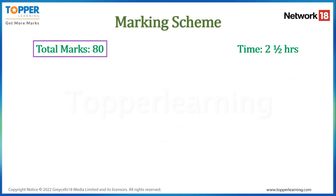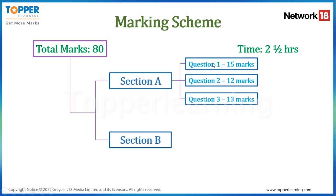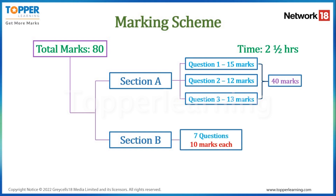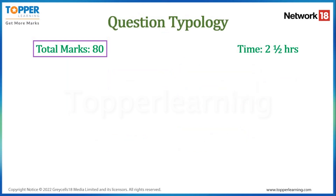Now let's talk about the marking scheme. Section A will have 3 questions: Question 1 is of 15 marks, Question 2 is of 12 marks, and Question 3 is of 13 marks — totaling 40 marks. Section B has 7 questions, 10 marks each. Since you attempt any 4, that is also 40 marks. So Section A is 40 marks and Section B is 40 marks, making a total of 80 marks.